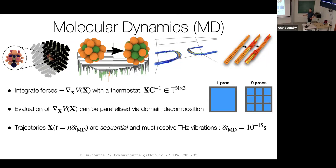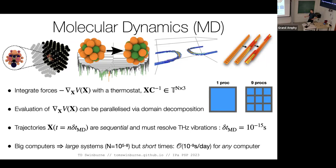The issue with MD is that we have to integrate trajectories in serial — each time step comes after the previous — and we have to resolve terahertz vibrations, so our time stepping is very small just to remain stable. No matter the size of computer, we have very poor strong scaling: I can simulate a system twice as large, but I can't simulate the same system twice as fast. This gives a strong timescale limitation of one to 100 nanoseconds per day of compute time.